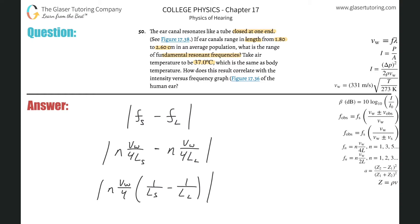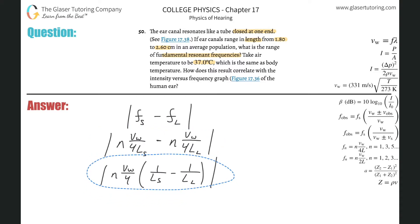This would simply be n times vw all over four, multiplied now by one over the length of the shorter tube minus one over the length of the longer tube. Now all I got to do is really just plug everything in.